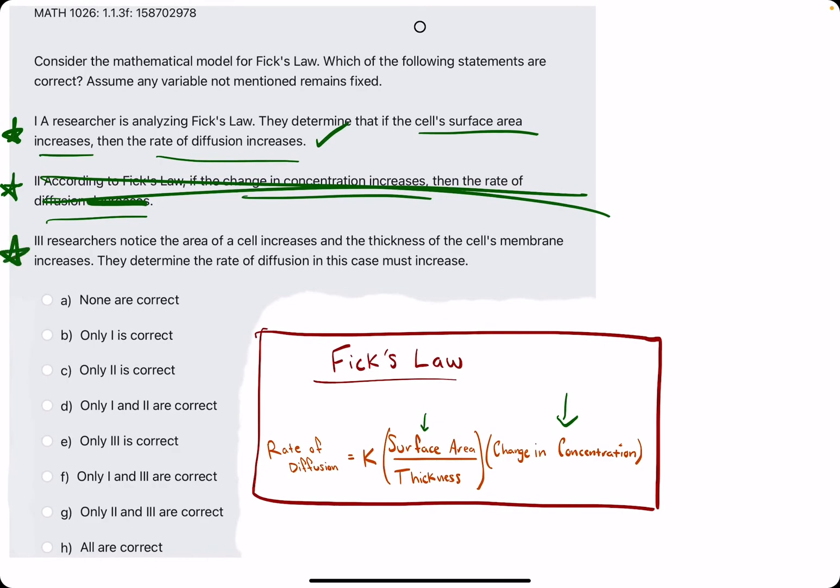Number 3. The researchers noticed the area of the cell increases and the thickness increases. They determined the rate of diffusion in this case must increase. All right.